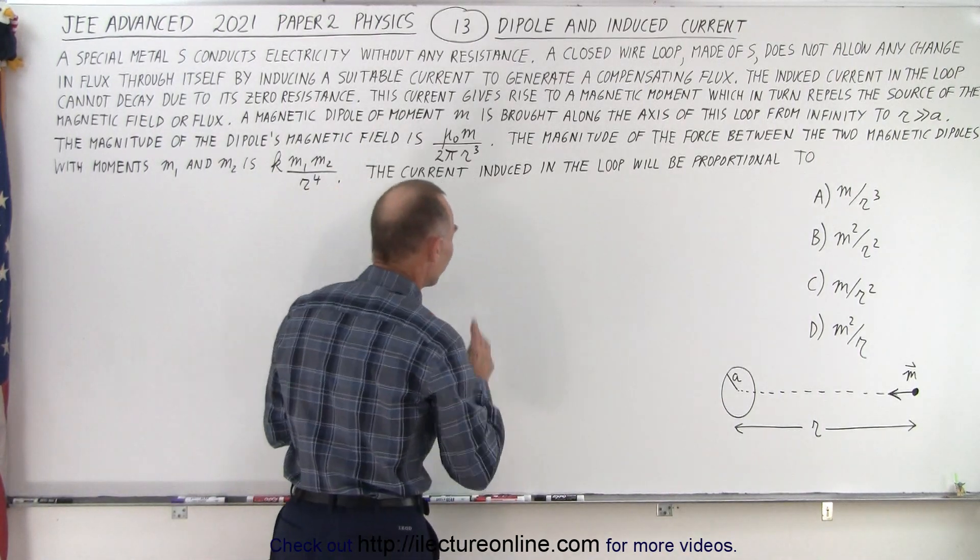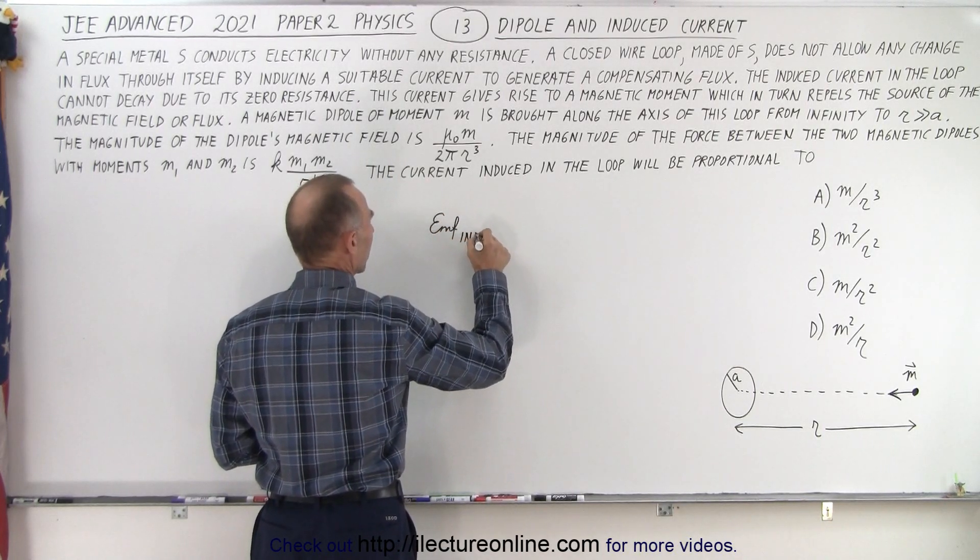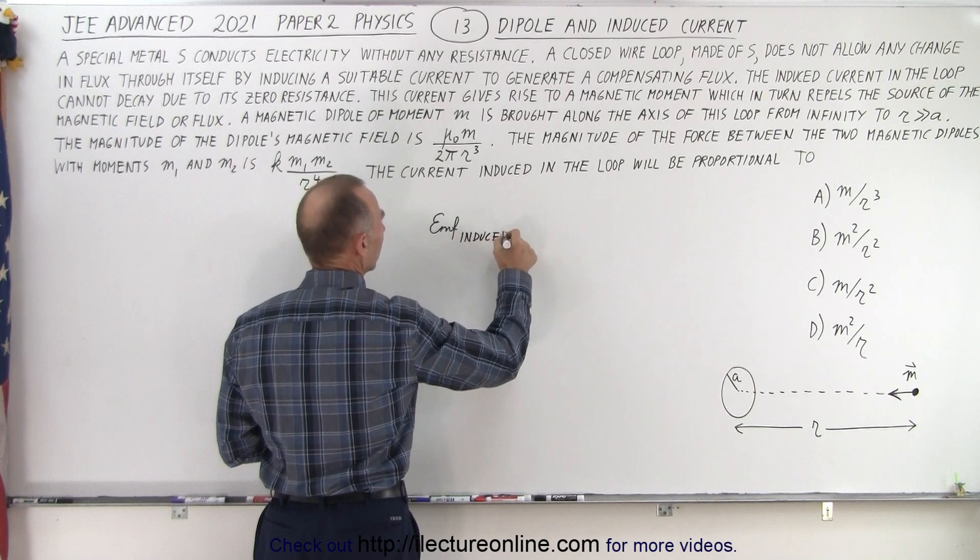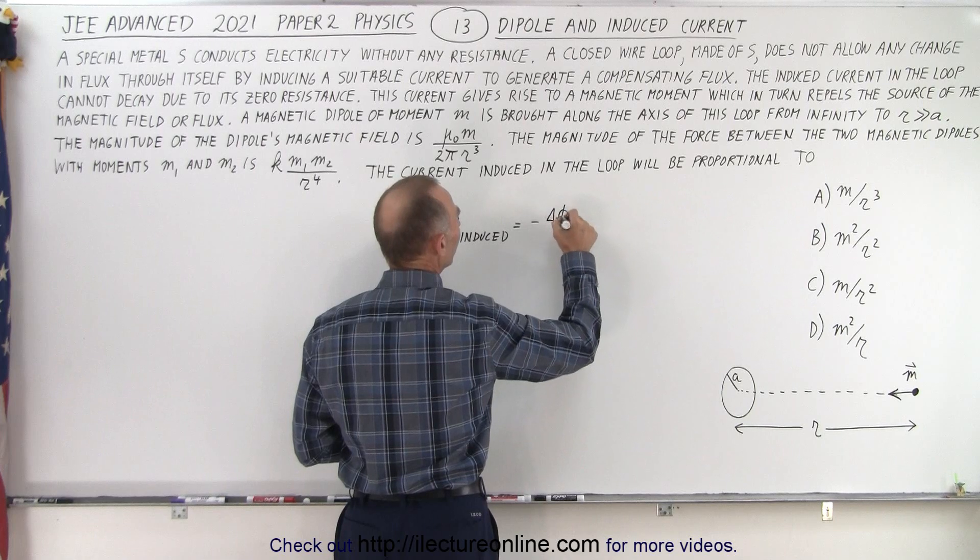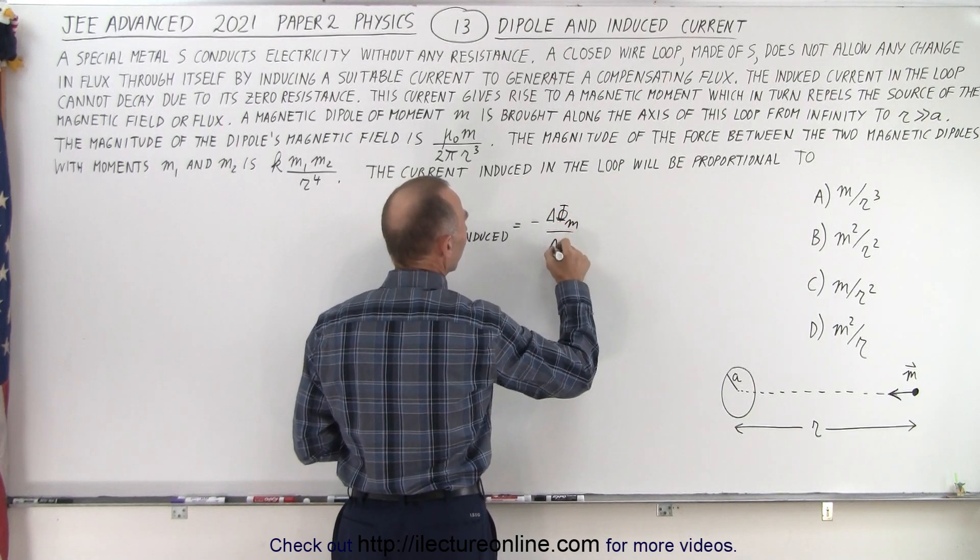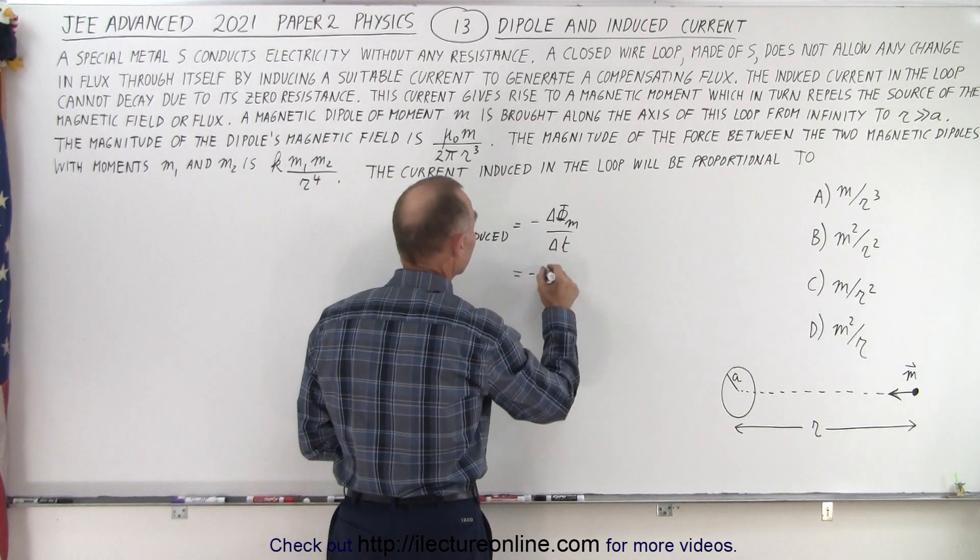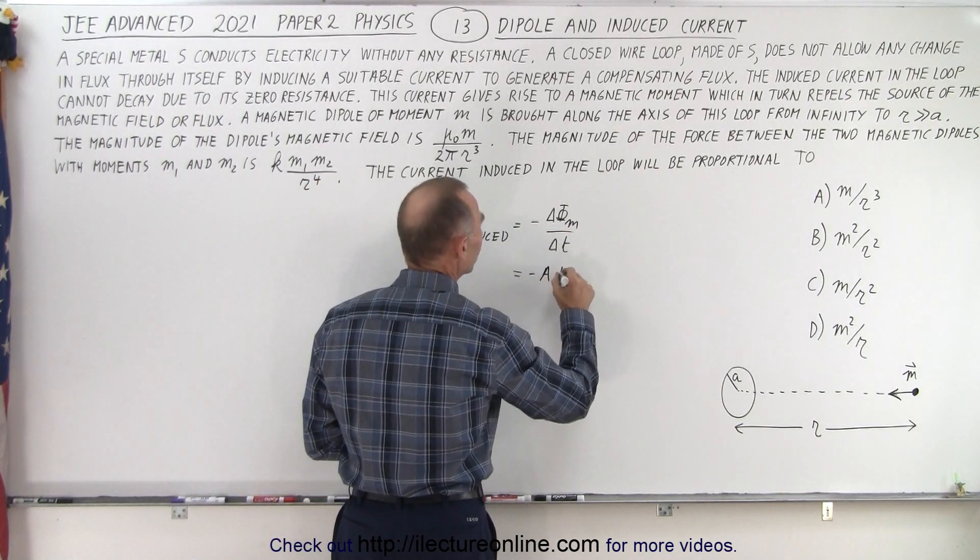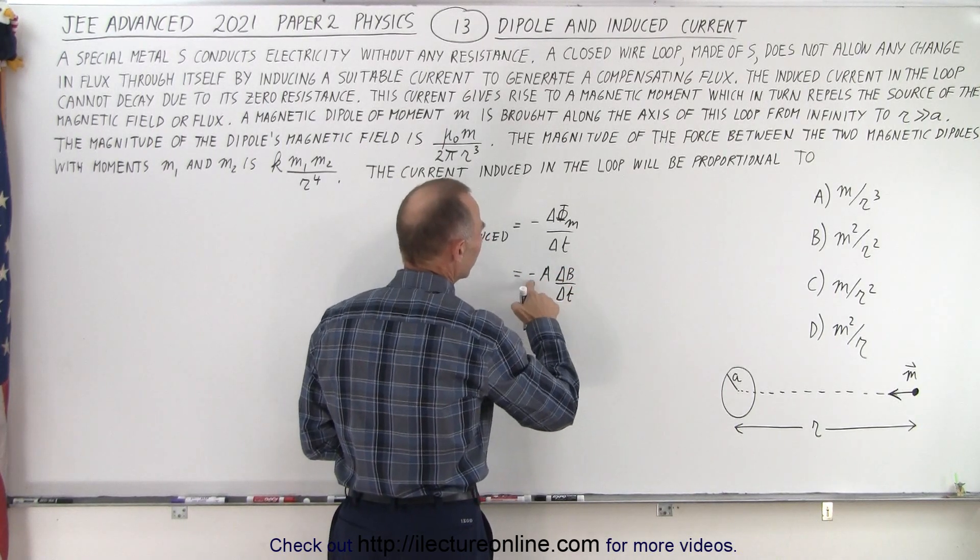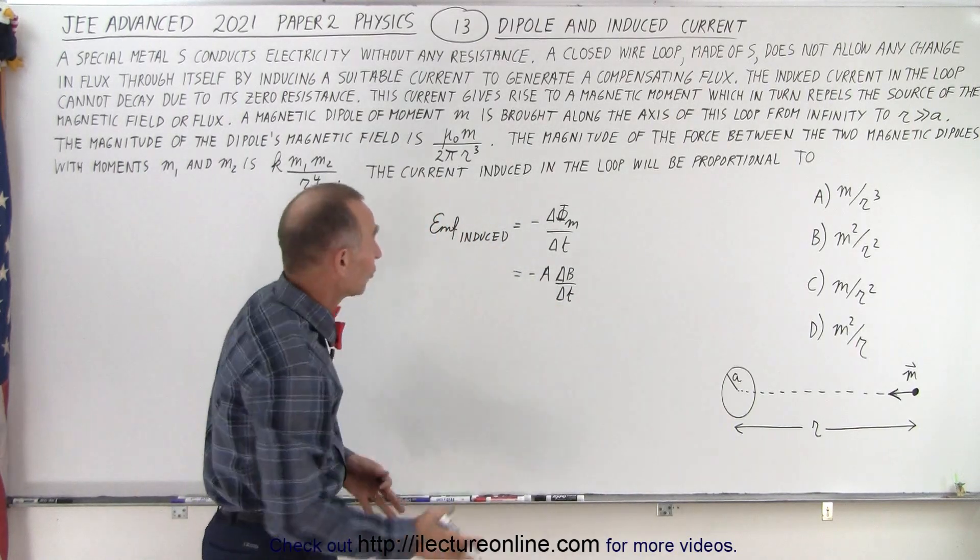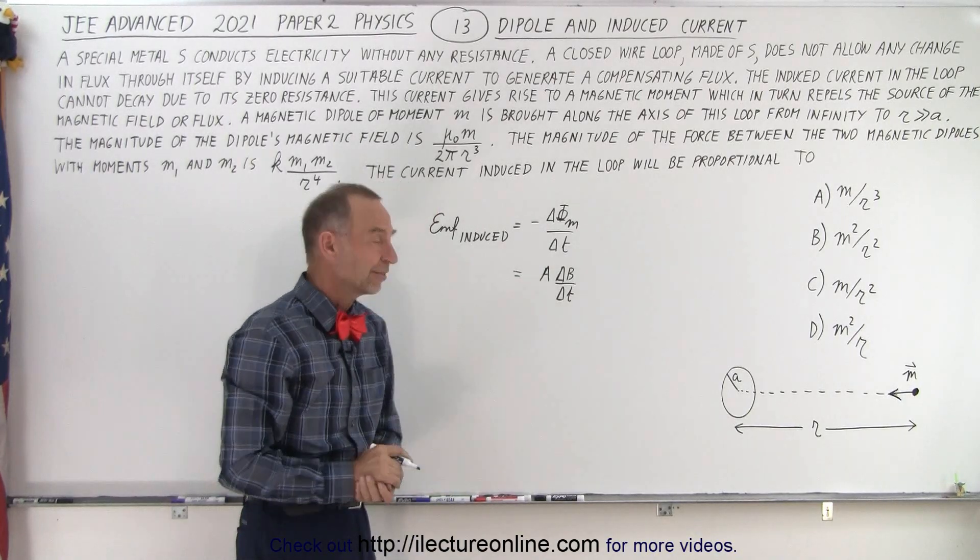We understand that the induced voltage, remember, the EMF induced, by definition is equal to the negative change in the magnetic flux over time. In other words, it is equal to the negative area times the change in the B field over time. And of course, we don't really care about the negative, because we just want the magnitude, so we can just go ahead and get rid of the negative sign.